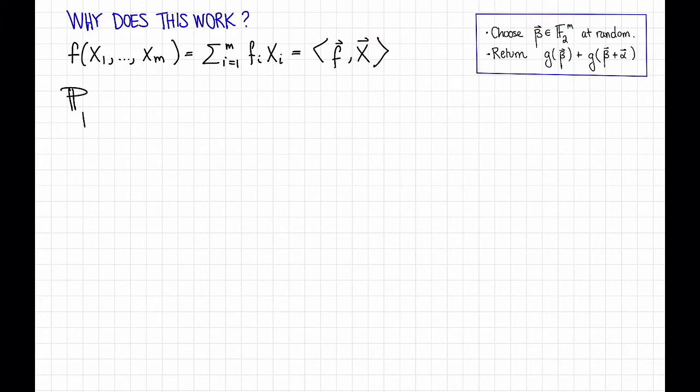Now, the probability, when I pick a random β in F₂^m, that f(β) is not equal to g(β) is at most p.